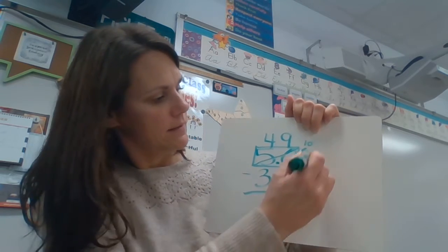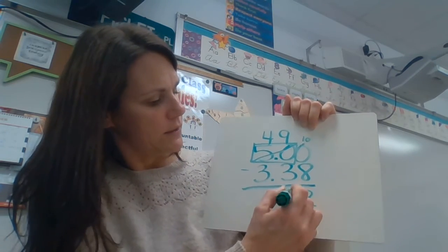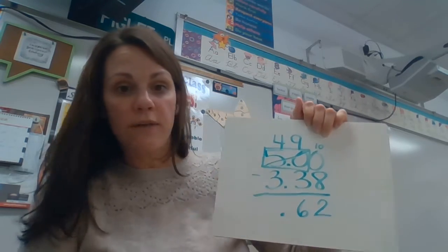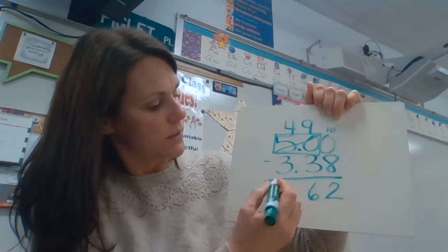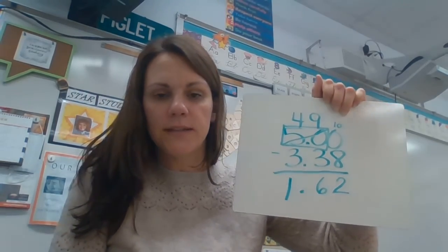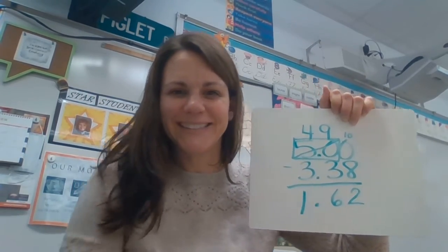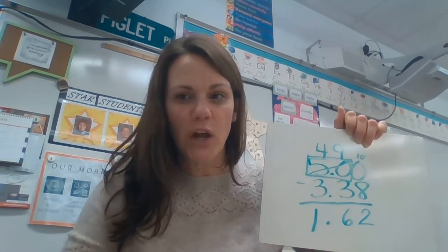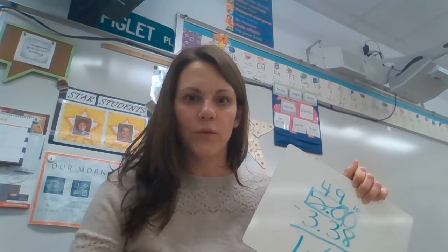Ten minus eight, nine minus three — decimal — and we do have a dollar to subtract: four minus three is one. One dollar and sixty-two cents is what you will get back. Making change is always good to know — it means you'll know how much money you're expected to receive so that you always get your full amount.